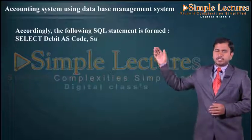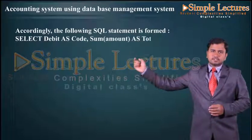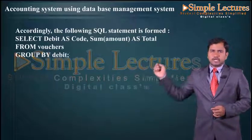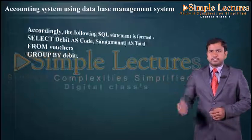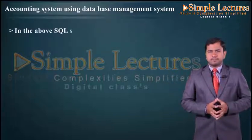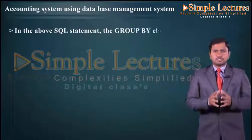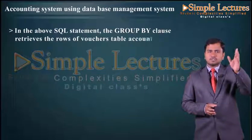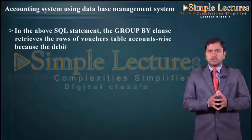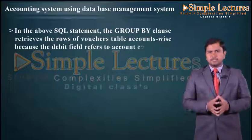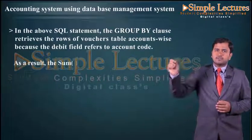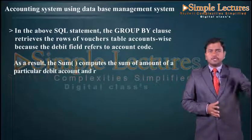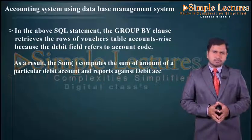Accordingly, the following SQL statement is formed: SELECT debit AS code, SUM(amount) AS total FROM vouchers GROUP BY debit. In this SQL statement, the GROUP BY clause retrieves rows of the voucher table account-wise because the debit field refers to the account code. As a result, SUM computes the sum of amount for a particular debit account and reports it against the debit account in the SELECT clause.